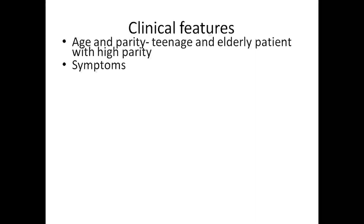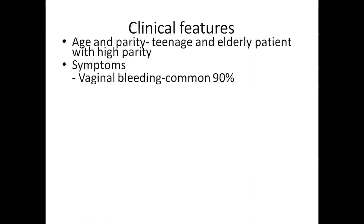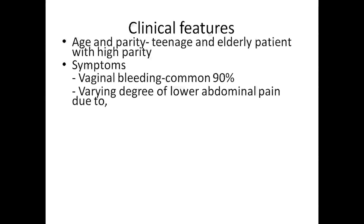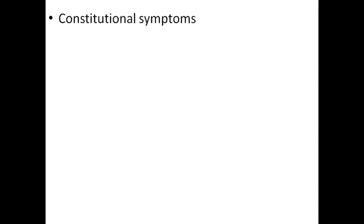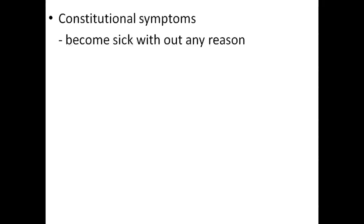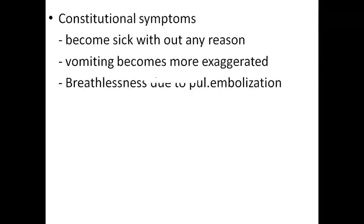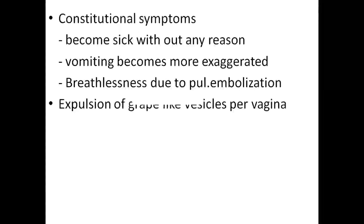Clinical features include age and parity — this is common in teenage and elderly patients with high parity. Symptoms include vaginal bleeding which is common, varying degrees of lower abdominal pain due to overdistension of the uterus, concealed hemorrhage, rarely perforation of uterus, infection, uterine contraction, and constitutional symptoms such as feeling sick without any reason, vomiting becoming more exaggerated, breathlessness due to pulmonary embolization, expulsion of grape-like vesicles per vagina, and absent history of quickening.